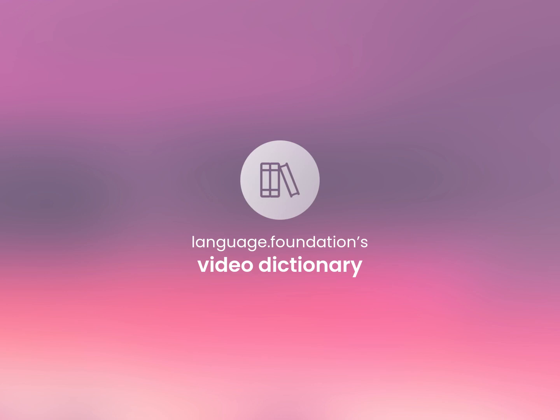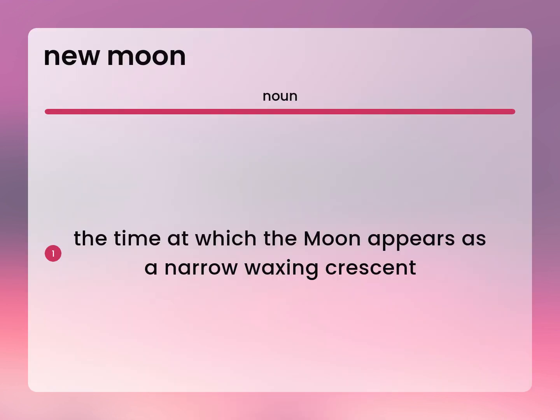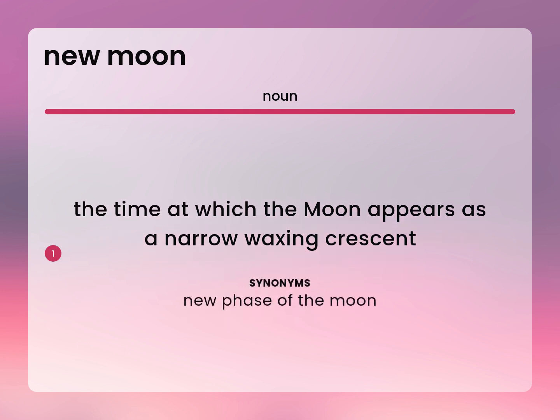Language.Foundation's Video Dictionary, helping you achieve understanding. The time at which the moon appears as a narrow waxing crescent. New phase of the moon.